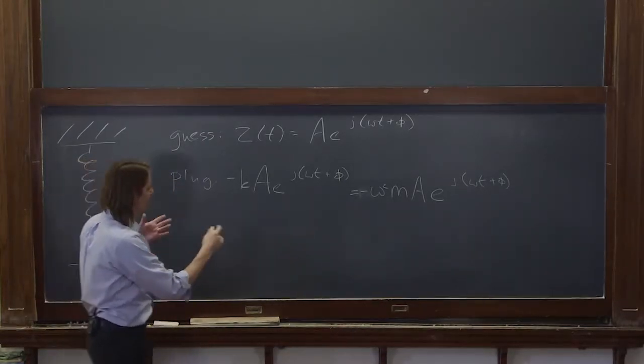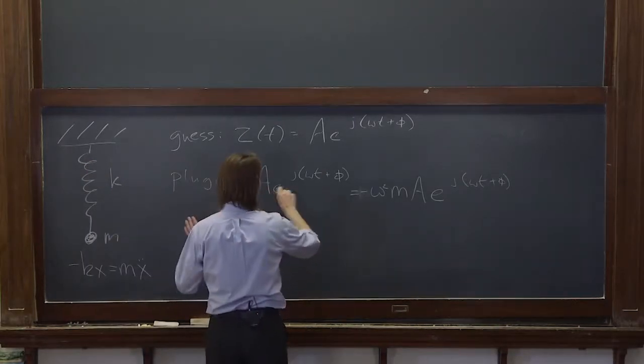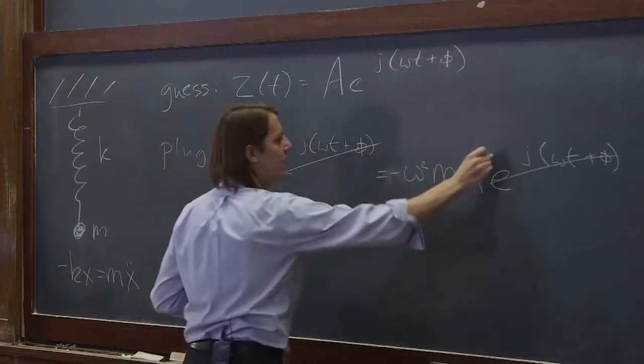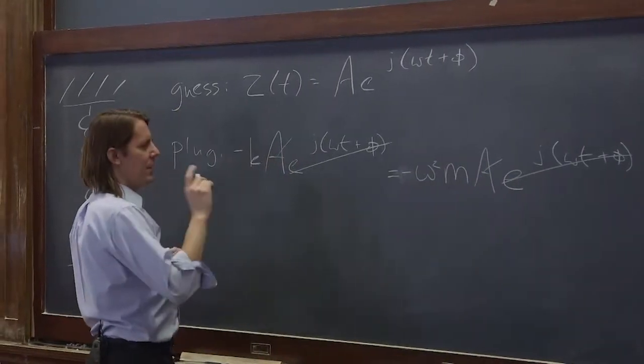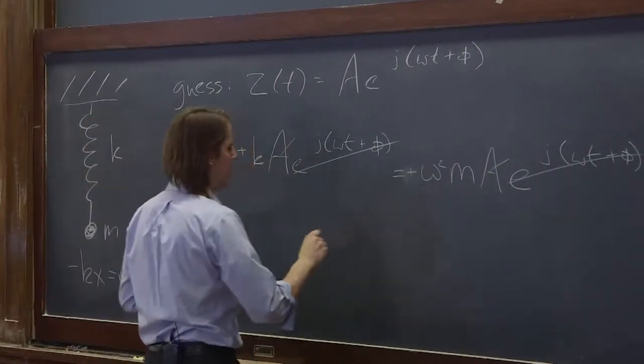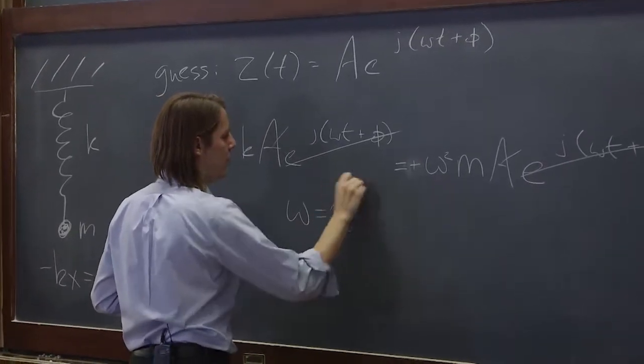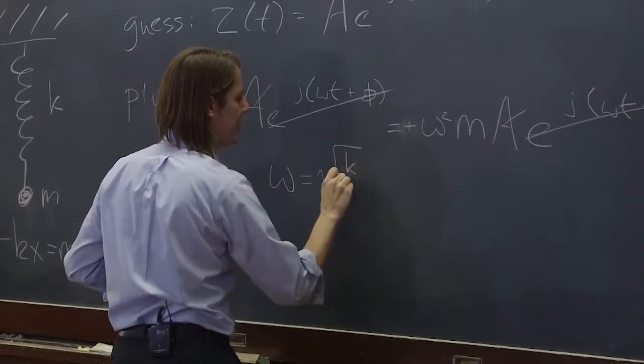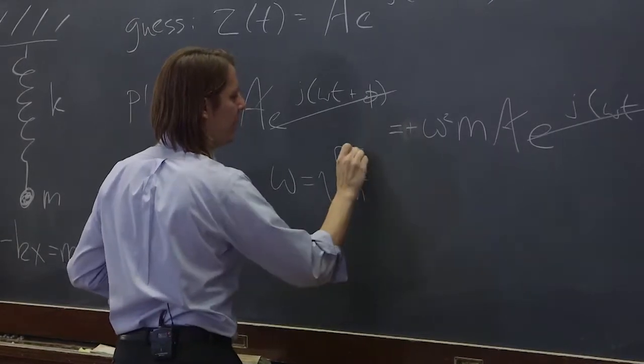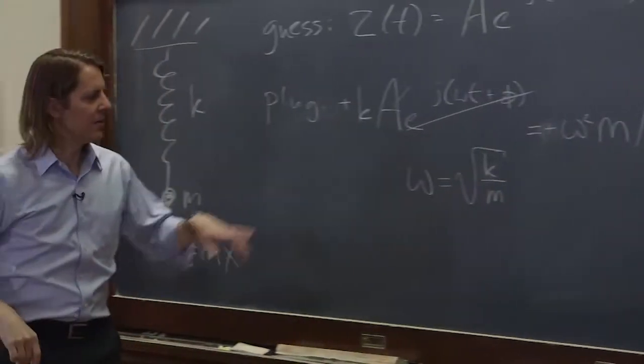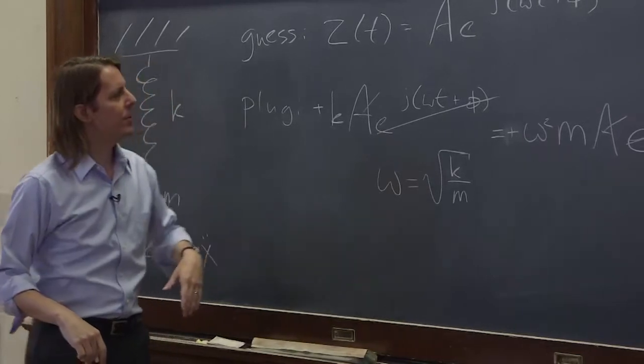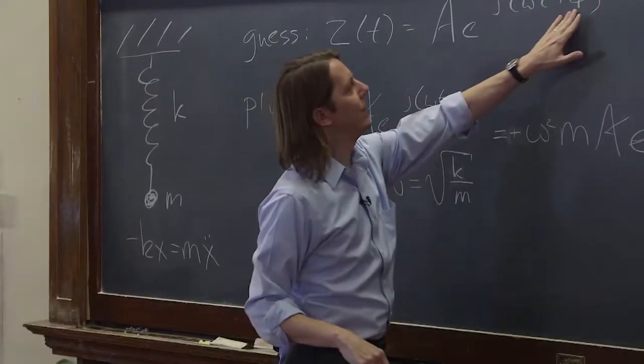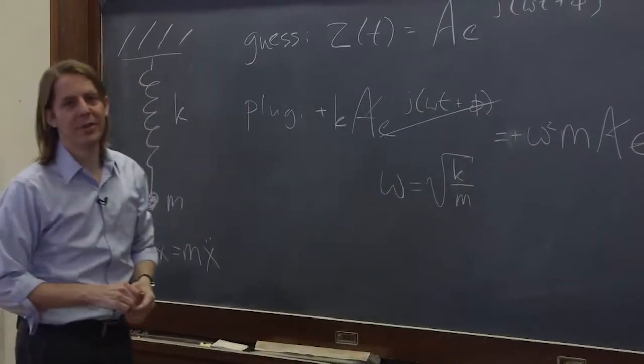So we plug it in, and the equation says, yes, it looks like it's going to be OK. I think I can work with you there, except the a goes away, this goes away. And you see, it works if omega is the square root of k over m. So the exact same thing the equation of motion required last time, it requires this time. A specific frequency, square root of k over m,